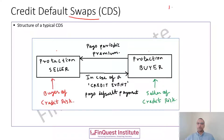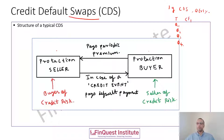Let's say we have a one-year CDS and the payment frequency has been set to quarterly. If we plot a simple timeline, we have Q1, Q2, Q3, and Q4. We'll look at the cash flows from both the buyer's and seller's perspectives. We have scenario 1, where there is no default, and scenario 2, where a default occurs.